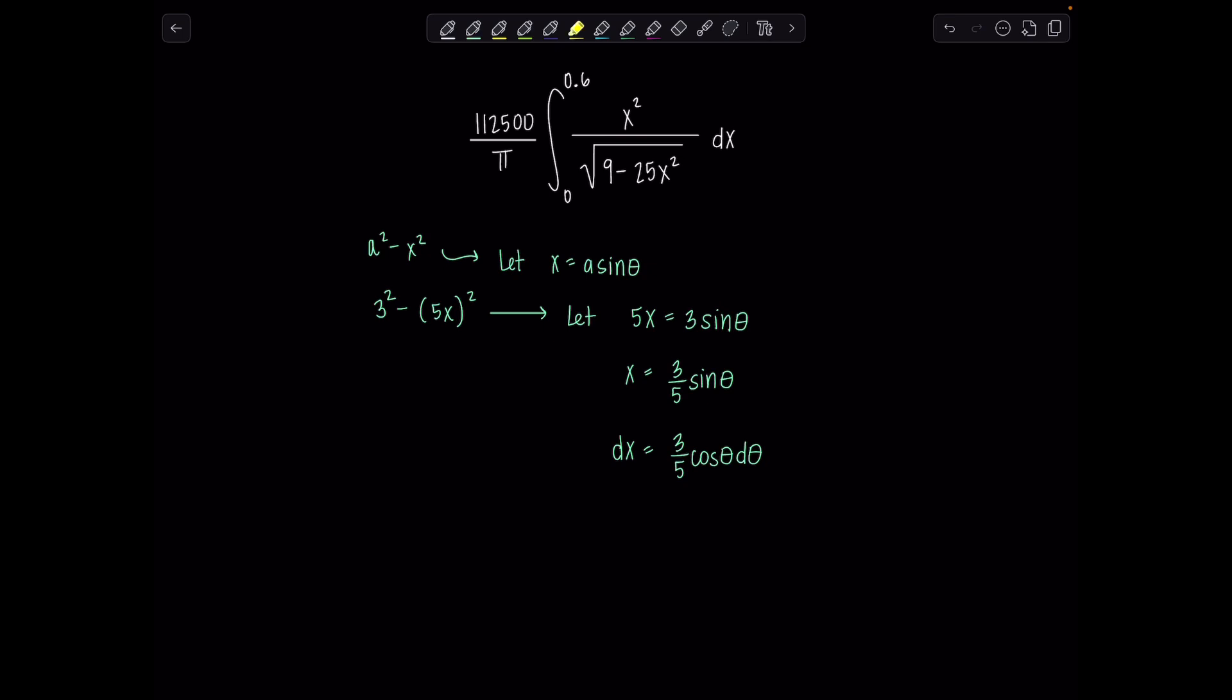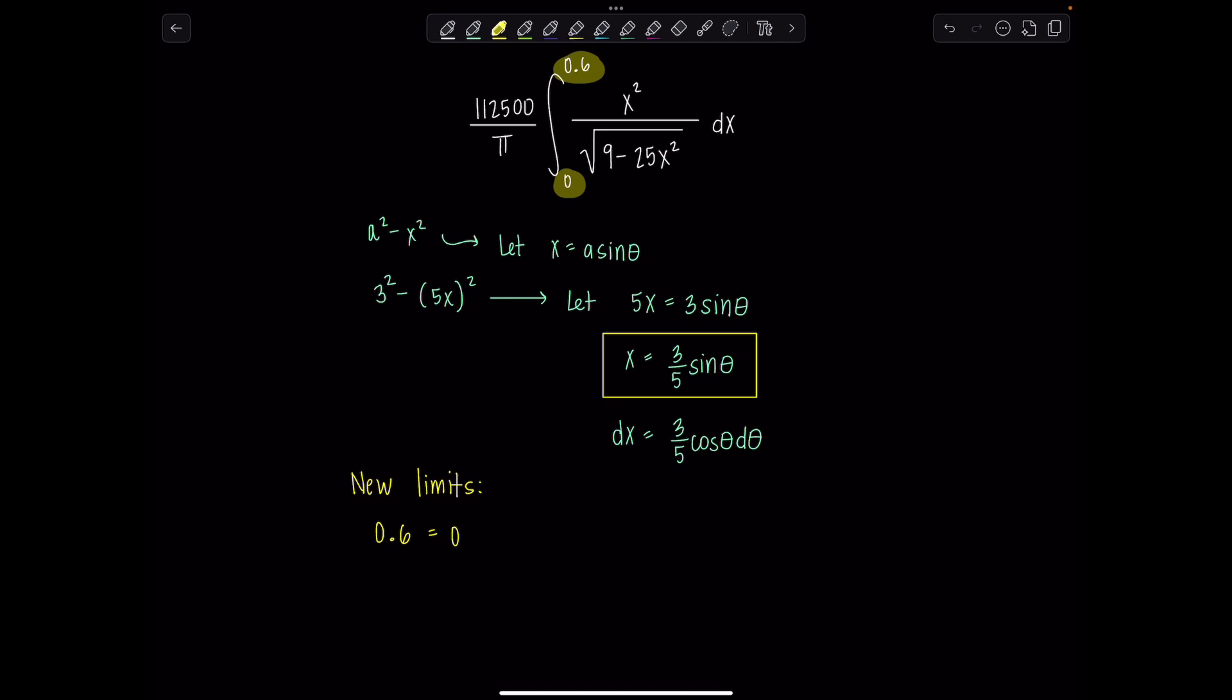Other thing we need to be careful about is the fact that this is a definite integral, so we have to figure out what our new limits of integration are going to be. Currently, these limits, 0 and 0.6, they belong to the variable x. So I'm going to substitute them in for x and find what my new limits are in terms of theta. Upper limit is 0.6, which equals 3 fifths sine theta, which means sine theta is 1. When does that happen? When theta is pi over 2. The lower limit, 0, equals 3 fifths sine theta. That just means sine theta is 0, so theta is 0. My lower limit stays 0.